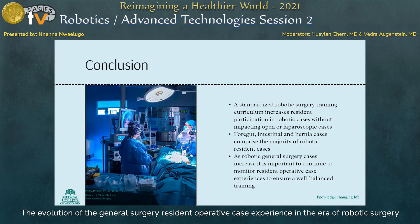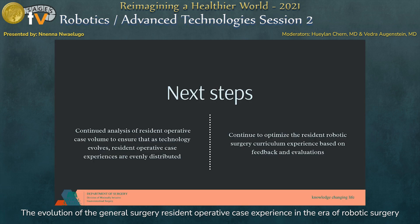In conclusion, this study highlights the effectiveness of a standardized robotic surgery training curriculum at increasing general surgery resident participation in robotic cases without detrimental effects on participation in open or laparoscopic cases. Foregut, intestinal, and hernia cases comprise the majority of robotic resident cases. As robotic general surgery cases continue to increase, the impact on laparoscopic and open case volumes needs to be carefully monitored to ensure a well-balanced resident training experience. Next steps include continuing to analyze resident operative case volume to ensure even distribution and to optimize the curriculum based on feedback and evaluations.